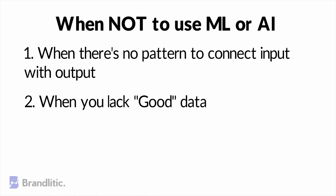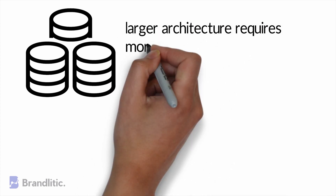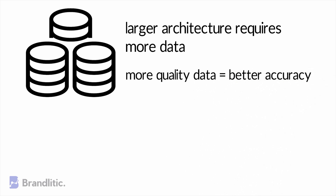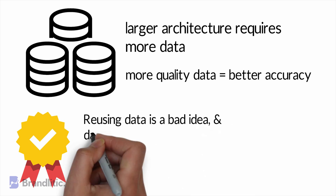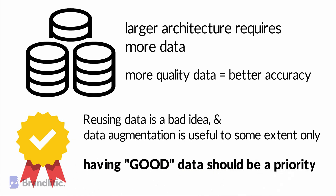2. When you lack good data. Machine learning algorithms require a large amount of data before they even begin to give useful results — the larger the architecture, the more data is required. While you might try to pull in every data you can find on the web, not all of it may be useful or applicable to your business use case and can even cause your algorithm to perform poorly. Reusing data is also a bad idea, and data augmentation is useful only to some extent. Having good data — data which can directly affect the end result of your model — should be a priority.